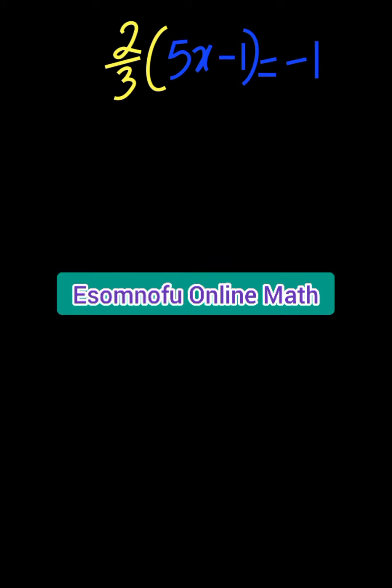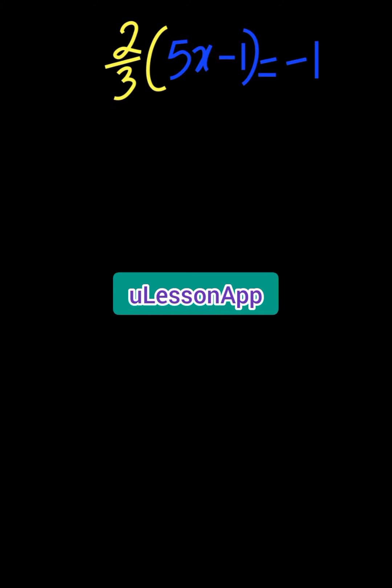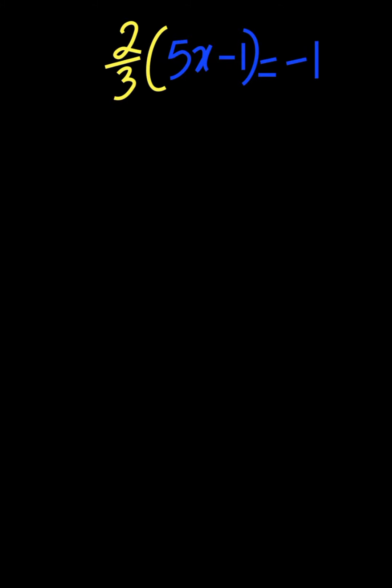Do not forget that this video is proudly powered by your lesson app. So we have 2 over 3 all to the power of 5x minus 1 is equal to minus 1 and we need to find the value of x.